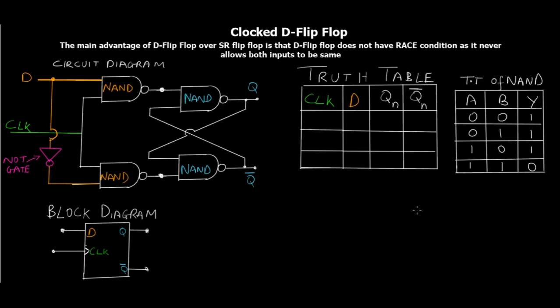Welcome back to Simple Snippets for another video tutorial on boolean algebra, logic gates and digital electronics. In this video we'll be covering the topic of the clocked D flip-flop. In the previous couple of tutorials we've already covered flip-flops, sequential circuits and the working of clocks, so if you missed those you can check the playlist. We'll start off with the basic circuit diagram.